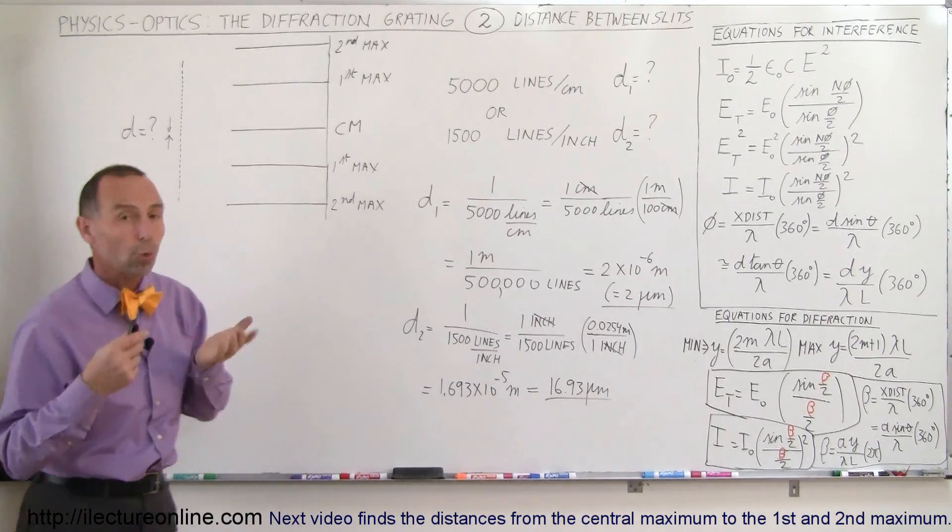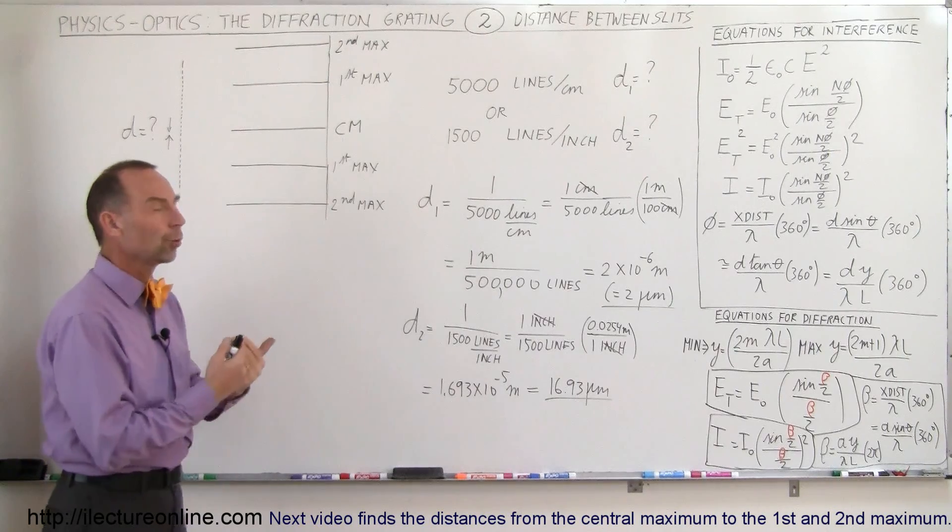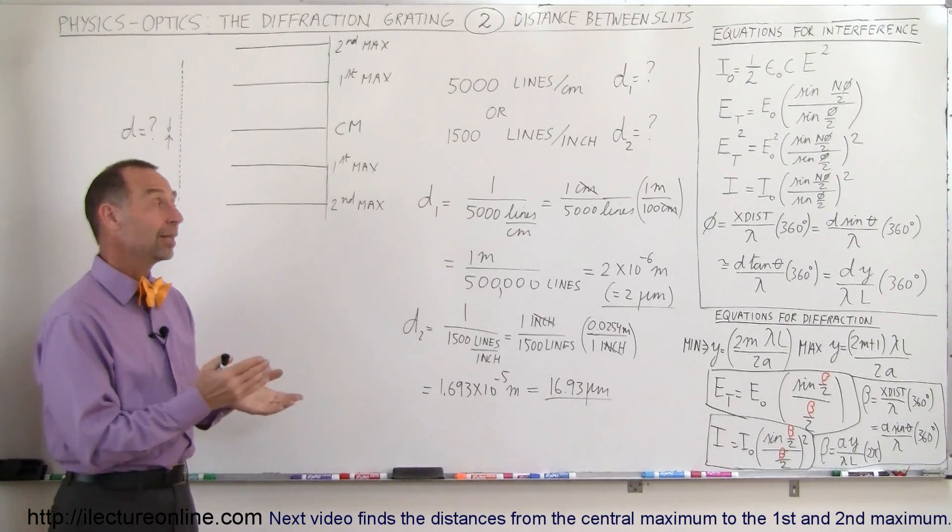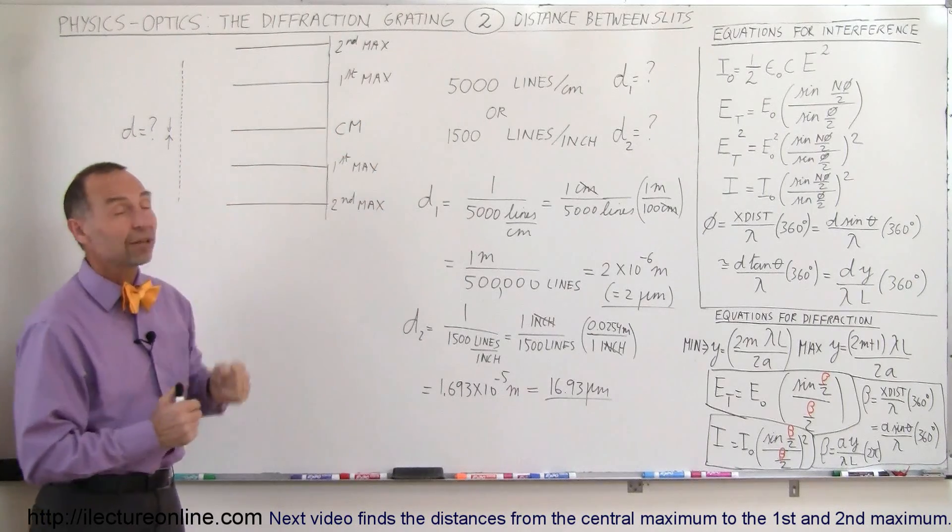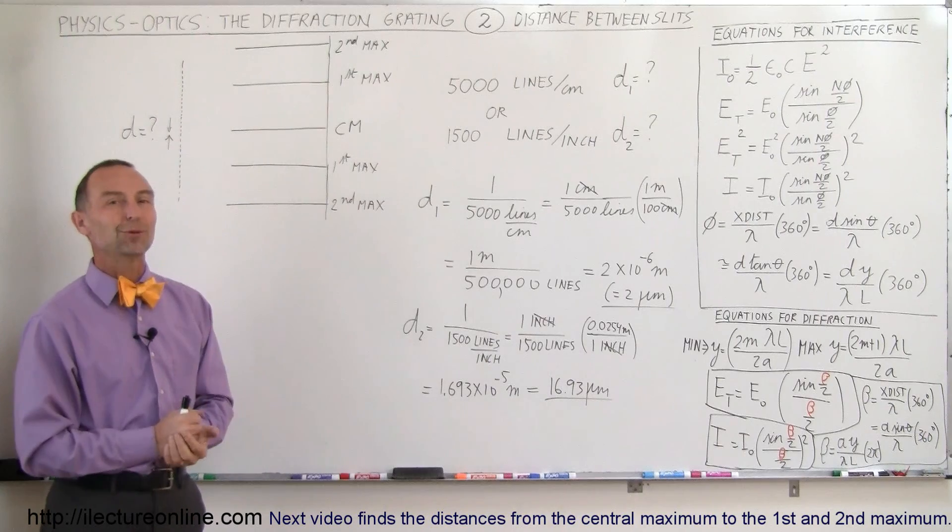By the way, those are called orders, but we'll see in future videos why they're called orders and how we utilize that. But now at least you know how to find the separation distance between slits given the number lines per centimeter or the number lines per inch. And that's how we do that.